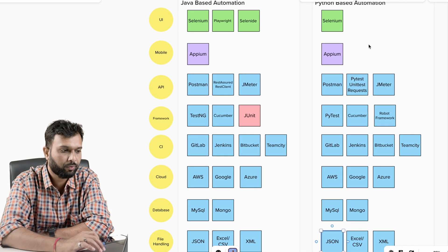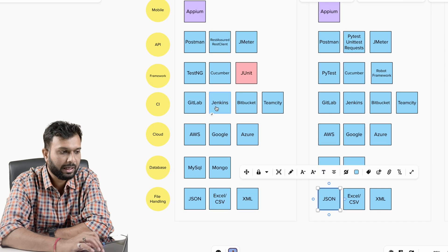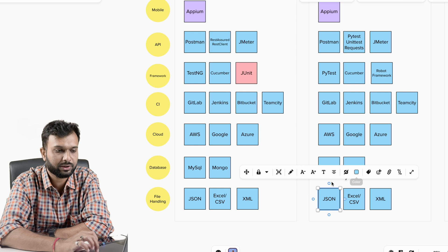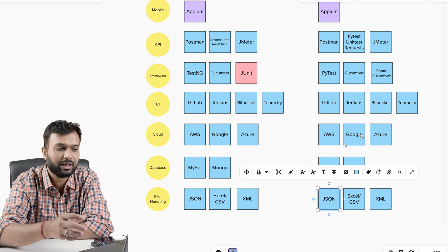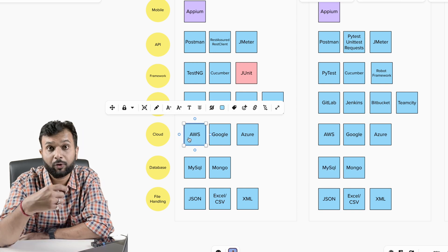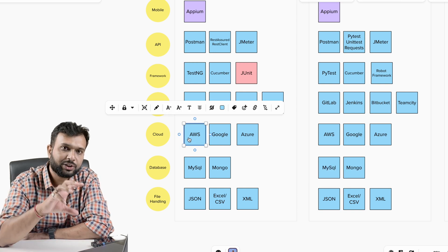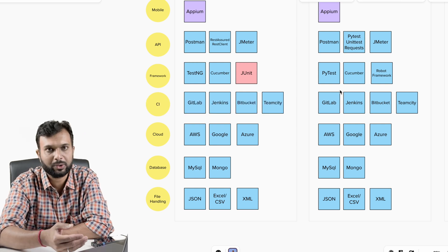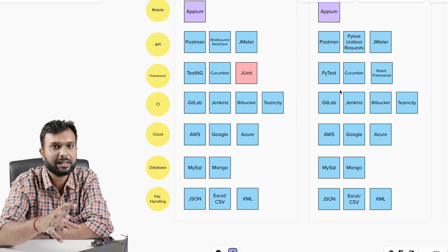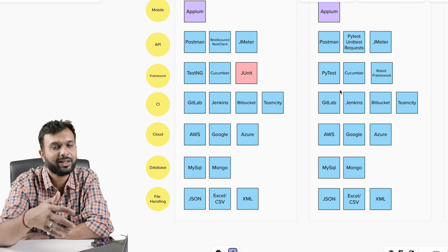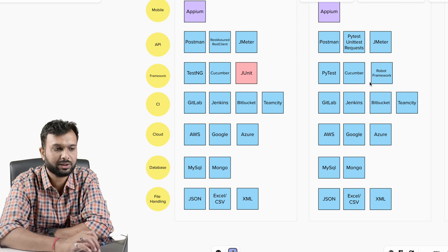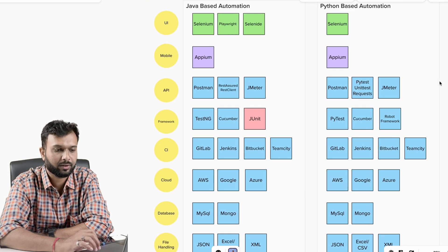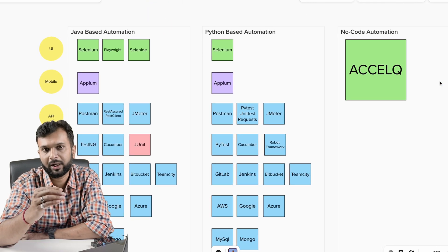The key insight is that the areas — UI, API, mobile, CI/CD, cloud, database — will remain the same across languages. Only the programming language changes. For example, AWS is tricky to learn the first time, but once you know it and then move to Python, the fundamentals are already clear — you just need to understand the syntax and you can start working.